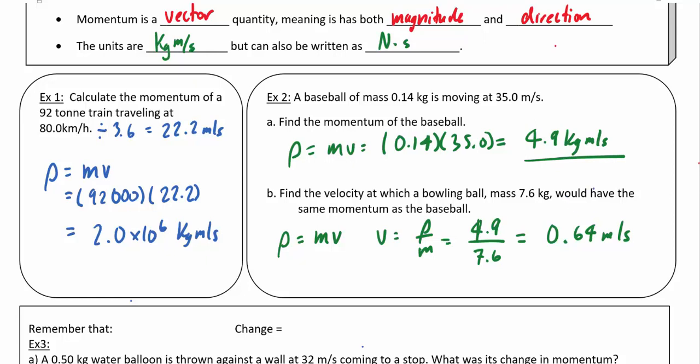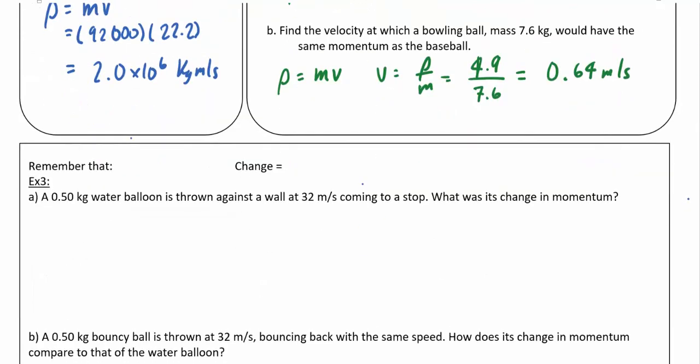Another way of thinking about this: these two objects having the same momentum, if they were to collide with each other, their two momentums could perfectly cancel each other out. Obviously, since it's much more massive, that bowling ball doesn't need to be traveling nearly as quickly.